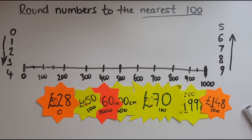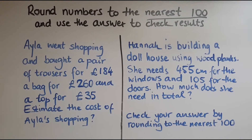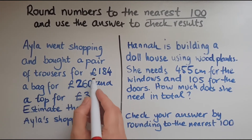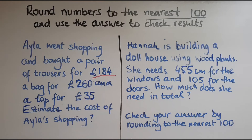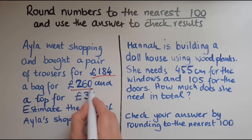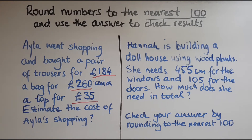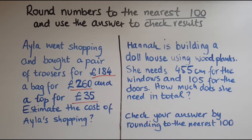So this explains how to round numbers to the nearest 100. We'll now look at some worded questions. Alia went shopping and bought a pair of trousers for 184 pounds, a bag for 260 pounds and a top for 35 pounds. Estimate the cost of Alia's shopping. Since we're talking about hundreds of pounds here, it makes sense to round to the nearest hundred.